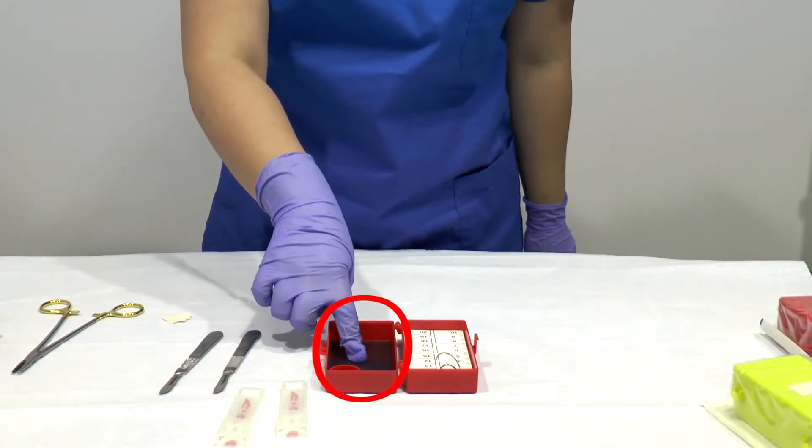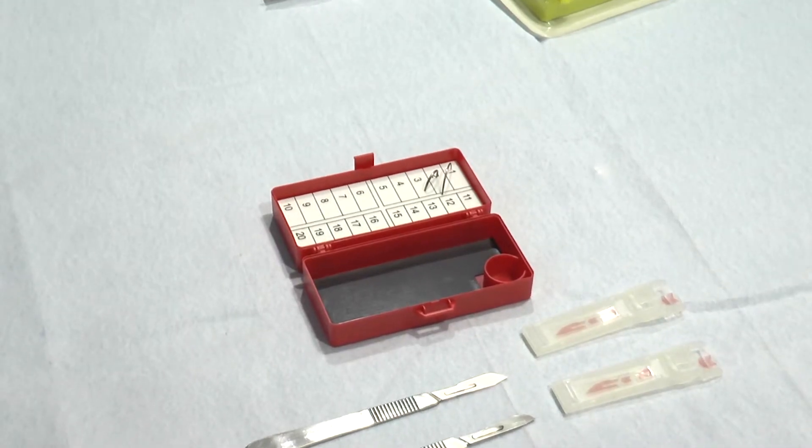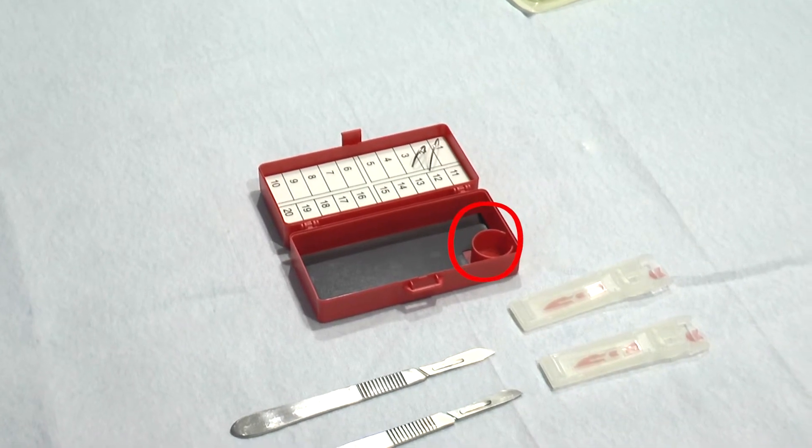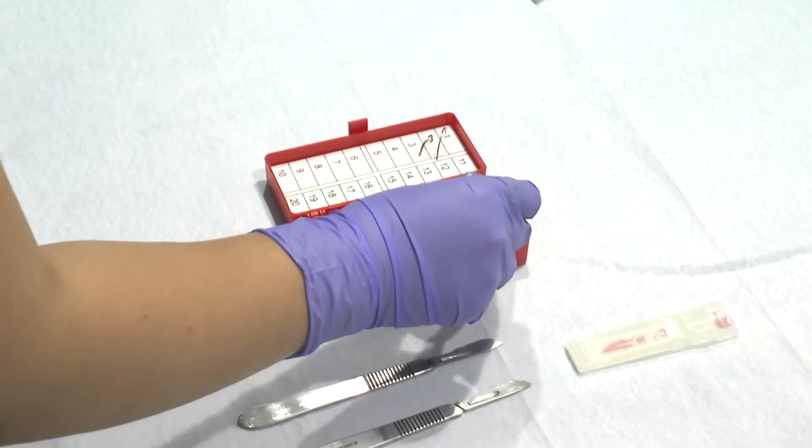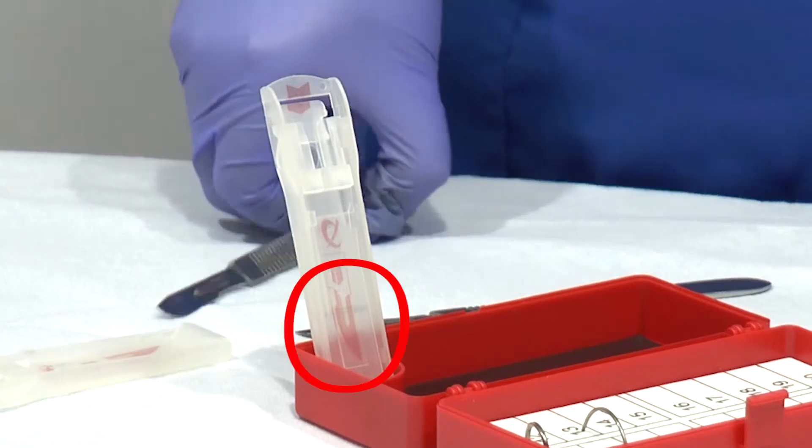To remove used scalpel blades, place the blade remover cartridge onto the round holder. It is round to enable you to face the cartridge in any direction that's comfortable for you. Make sure that the scalpel is facing the same direction as the red guide on the cartridge.